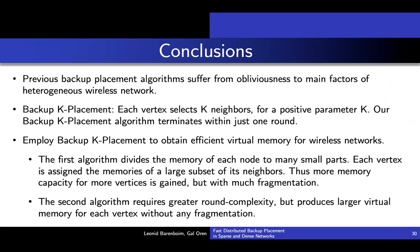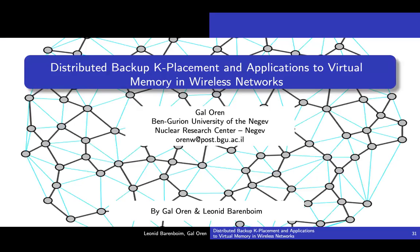To conclude our talk: previous backup placement algorithms suffer from obliviousness to main factors of heterogeneous wireless networks. We introduced backup K placement, in which each vertex selects K neighbors for a positive parameter K. Our backup K placement algorithm terminates within just one round. We employ backup K placement to obtain efficient virtual memory for wireless networks. The first algorithm divides the memory of each node into many small parts, assigning each vertex the memories of a large subset of its neighbors — gaining more memory capacity for more vertices but with much fragmentation. The second algorithm requires greater round complexity but produces larger virtual memory for each vertex without any fragmentation. Thank you very much.